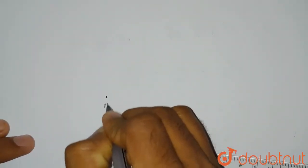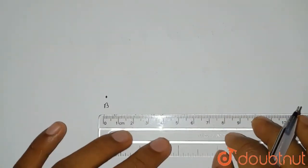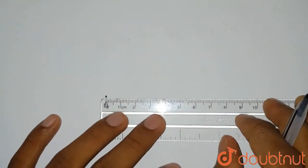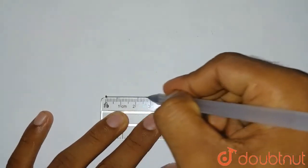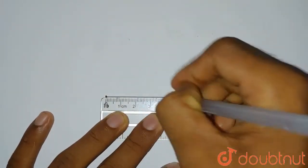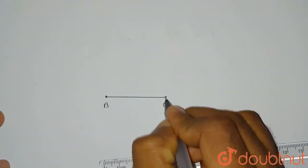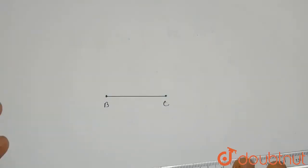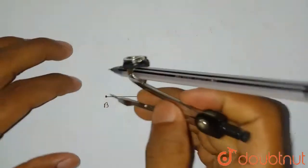Let's say this point is B. BC is given as 4 cm, so we'll take the 4 cm line. This is the C point. Now we'll use our compass to draw the perpendicular.